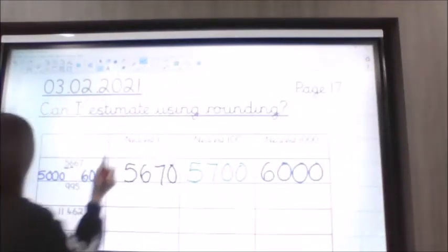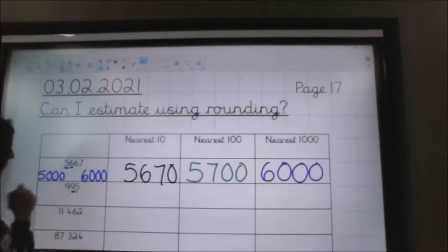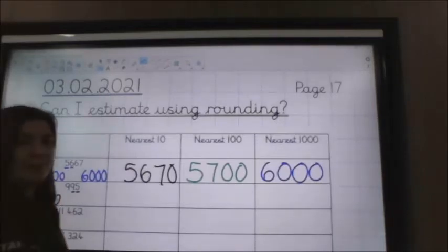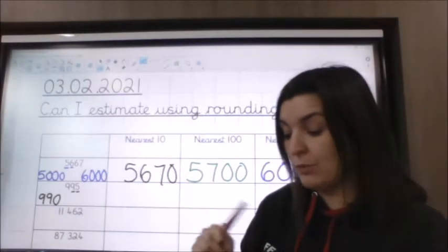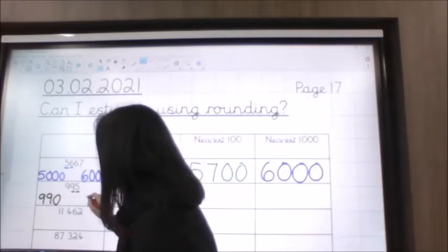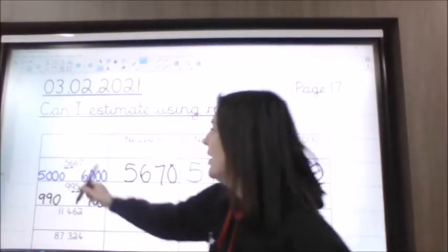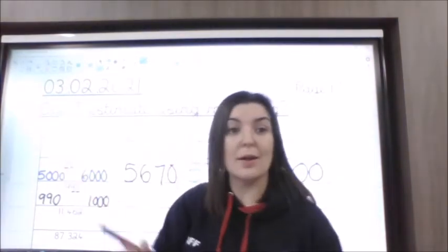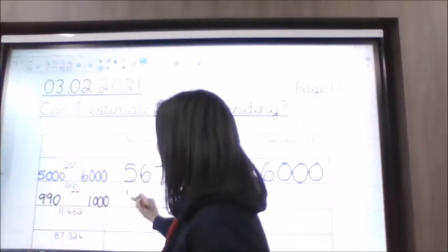So the nearest 10: I'm looking at the tens column and the ones column. It's in between 990 and 1,000. Because I'm on 90, the next ten is going to go to 1,000. Then I go to the ones column and it's a five — so you should have rounded up to 1,000.